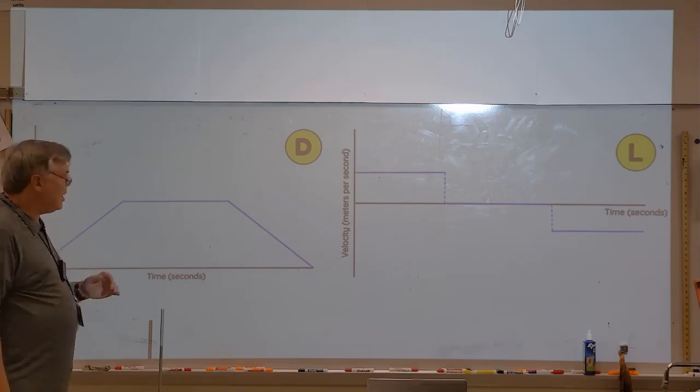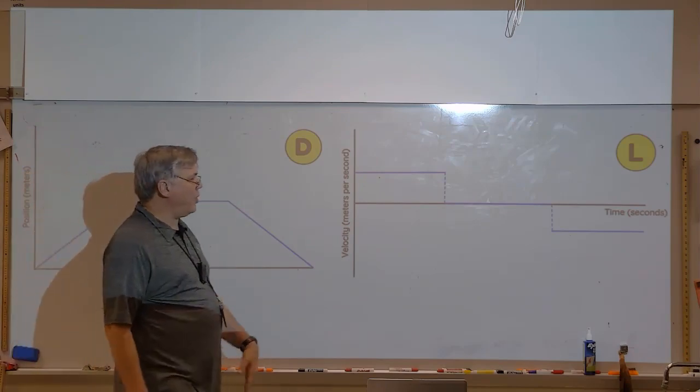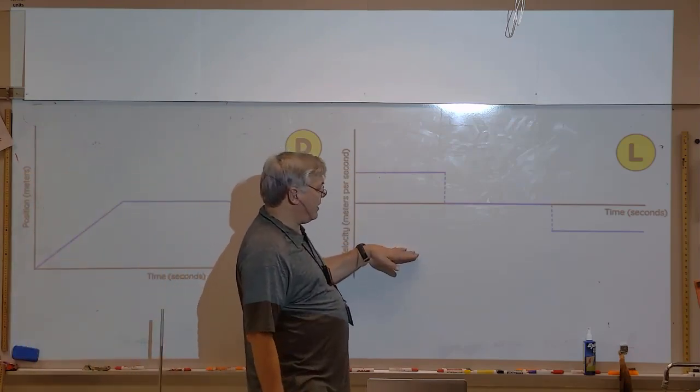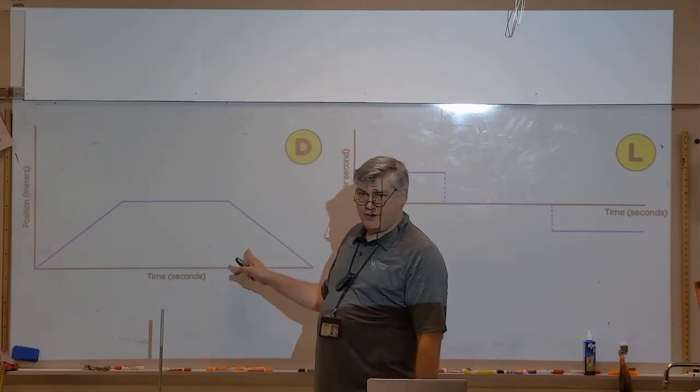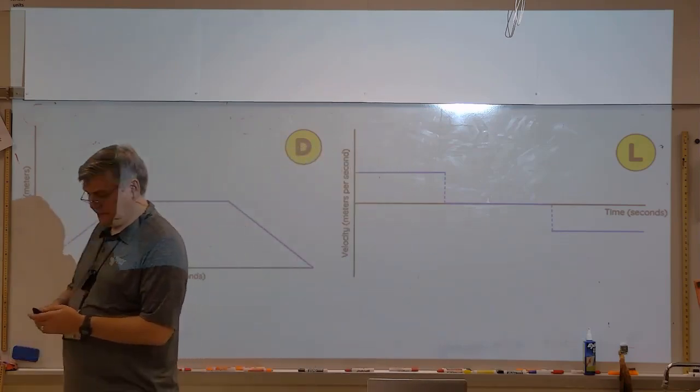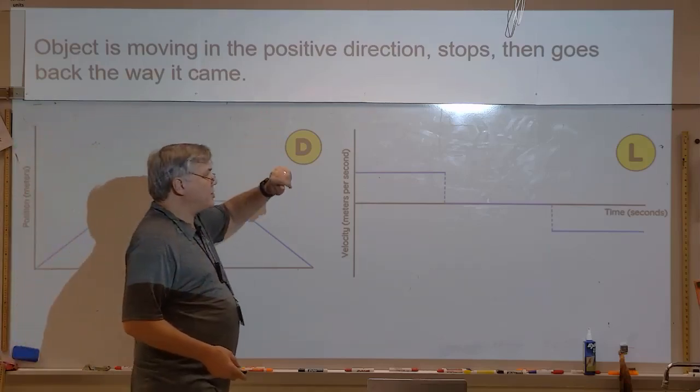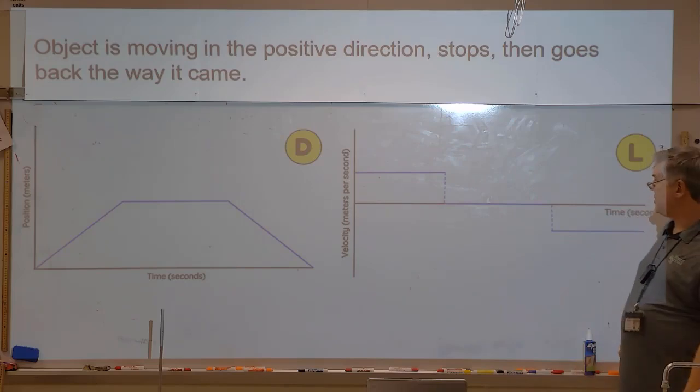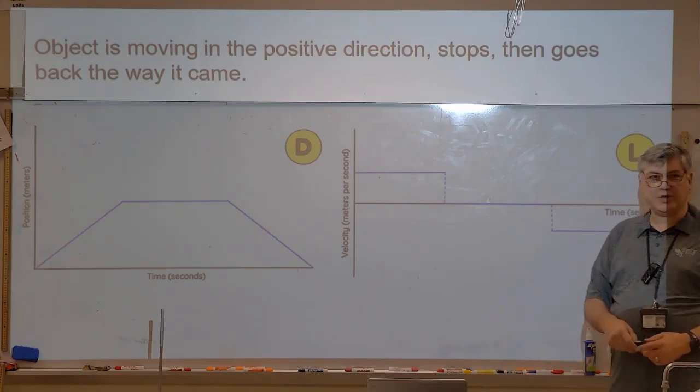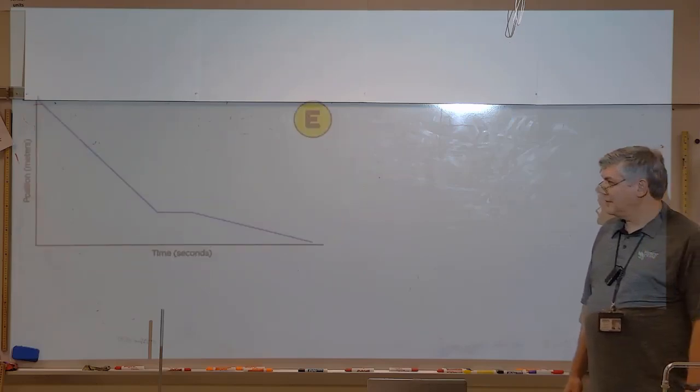This is kind of a problem with some people because they see it go up, which is not up, right? It's forward. But for purposes of the graph, we see up, level, down. So people want to go like that. They want to go up, level. They want to make this graph look like that graph. So object is moving in the positive direction, stops, and then goes back the way it came. So find that on your list. Next, make sure that you have D and L next to it.